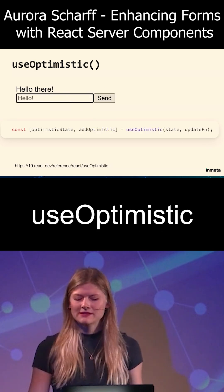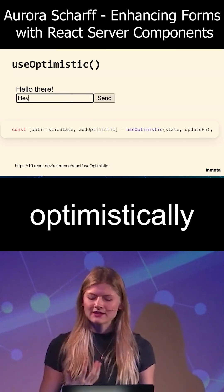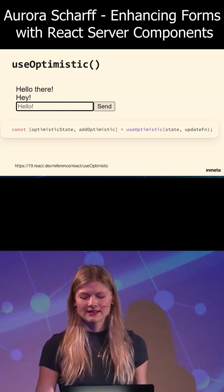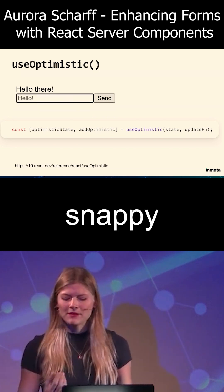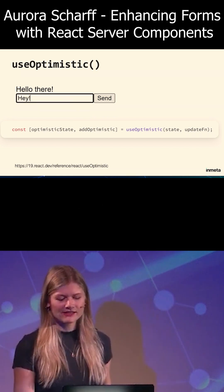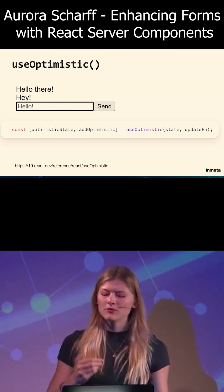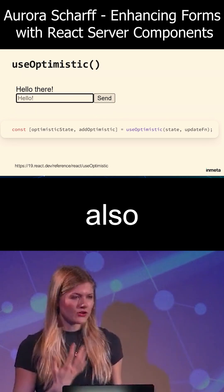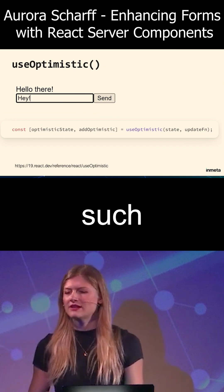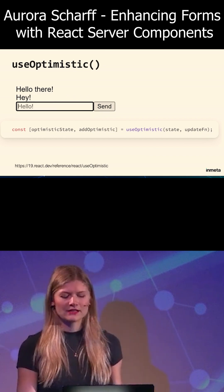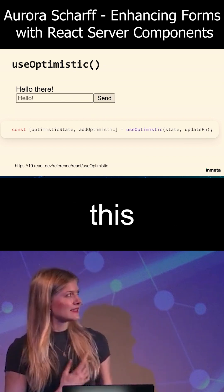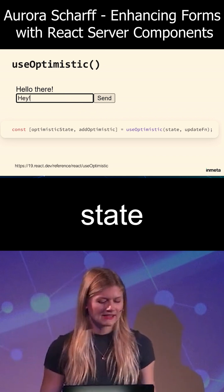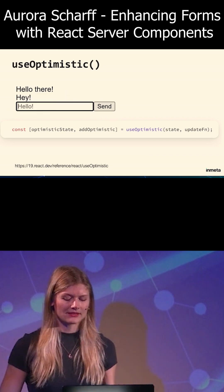Lastly, we have useOptimistic, which is a hook that lets you optimistically update UI while a background operation completes. This keeps the UI snappy by providing instant feedback to interactions. It can be used with server functions and form submissions, but also with other potentially slow operations such as filtering based on route params. This hook stands out because of its ability to seamlessly merge client and server state as the server finishes its update.